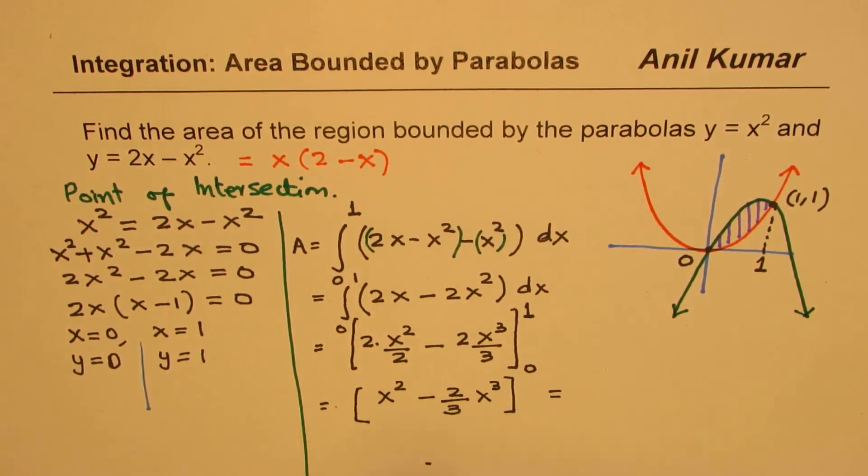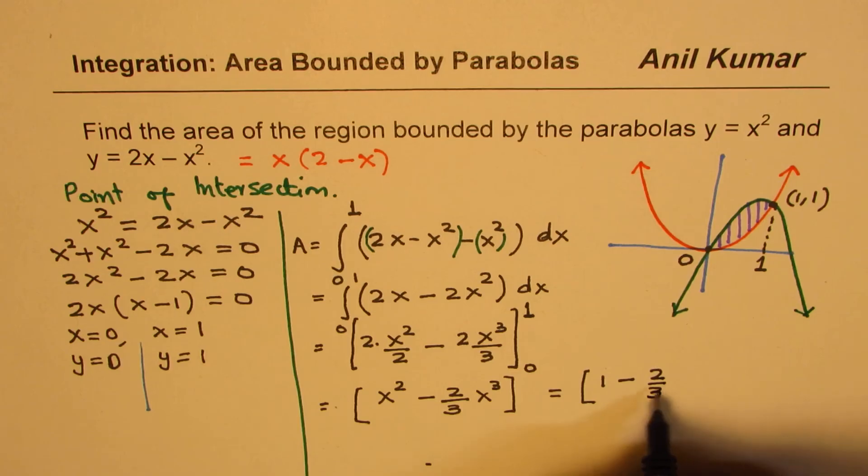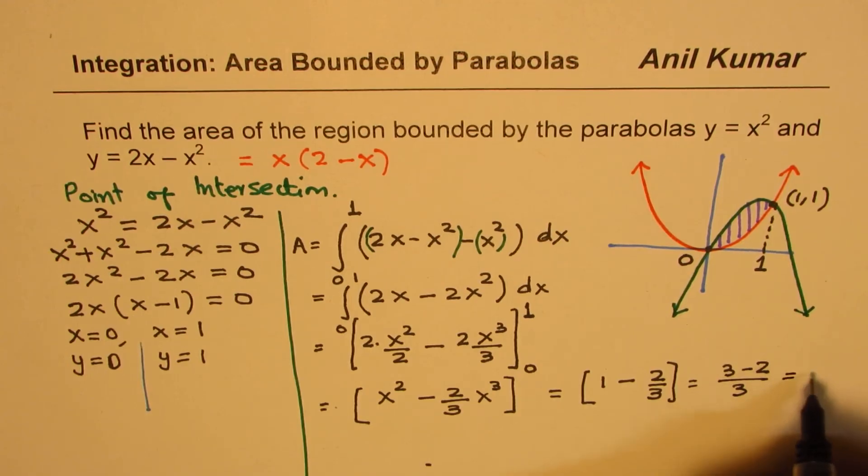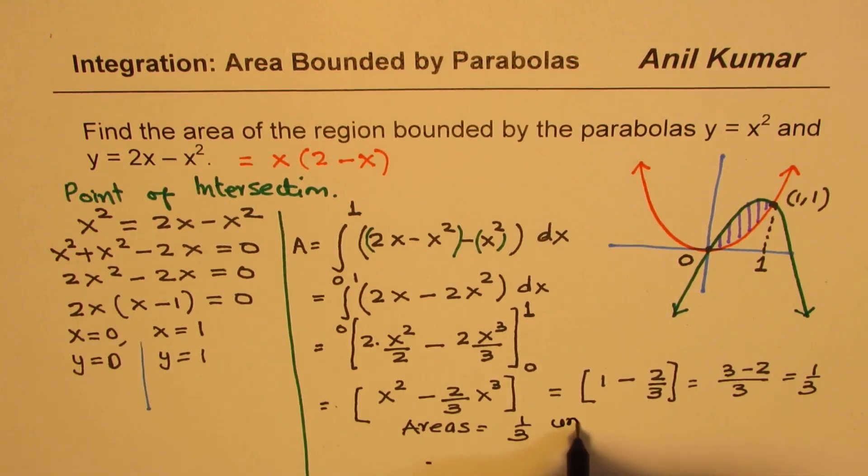For x equals 0, this term is 0. For 1, it is going to be 1 minus 2 over 3. That gives us 3 minus 2 over 3, or 1 over 3. So we get 1 over 3 unit squared as the area. So the area in this case is equal to 1 over 3 unit squared.